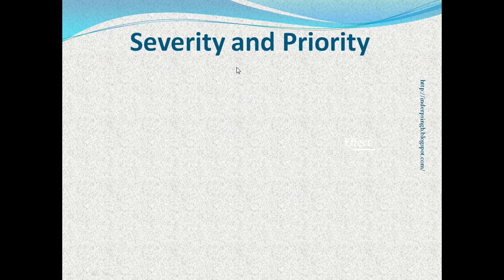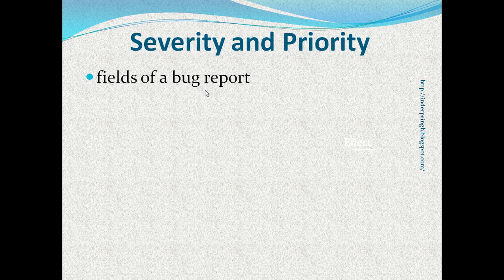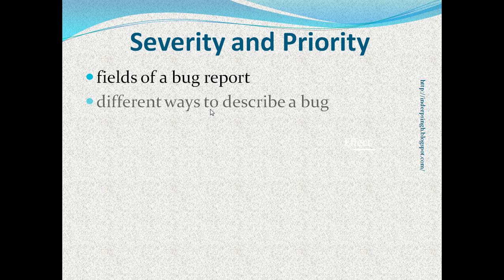Severity is a basic concept of manual testing, and so is priority. Severity and priority are the fields in every bug report. In some systems, priority is called importance. Severity and priority are merely different ways to describe a bug.